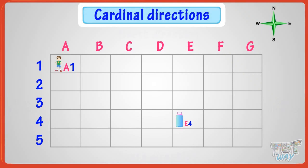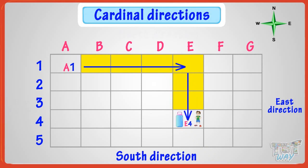First, Joy will move 4 steps towards east or right, and then move 3 steps towards south. And Joy will reach the help bottle.